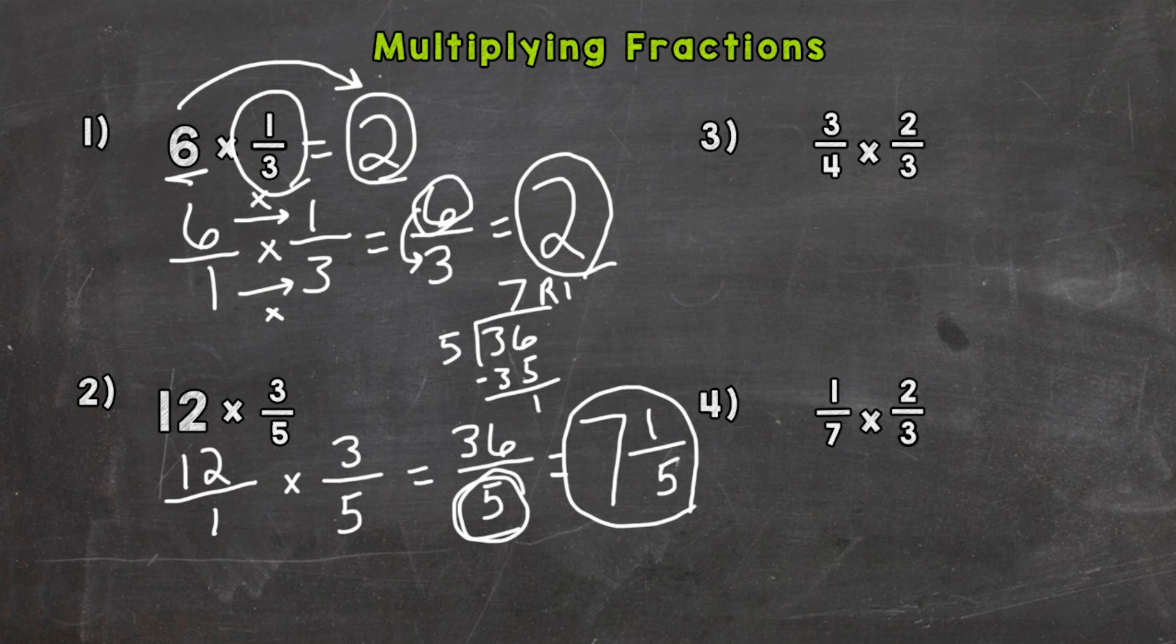So seven and one-fifth. So again, we started with twelve, and we multiplied by something less than a whole. So our answer actually decreased in value relative to what we started with in the problem. And that's okay, because we multiplied by something less than one whole.